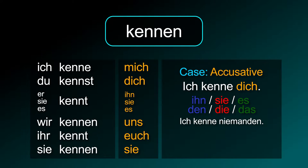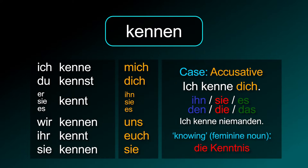Use the correct personal pronoun or article depending on the noun or the person's gender. 'I don't know anybody' is 'Ich kenne niemanden'. Its noun is feminine: die Kenntnis.